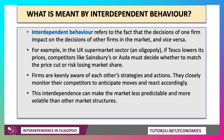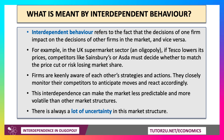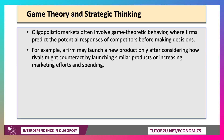This interdependence is a key word to use in any exam question on oligopoly. It certainly makes the market less predictable and often more volatile than other market structures — harder to model, with always a lot of uncertainty. So interdependence can lead to market uncertainty. Often oligopolies involve game theoretic behaviour: firms predict the potential responses of competitors before making their decisions. A firm might launch a new product or new brand only after considering how rivals might counteract by launching similar products or increasing their marketing spend.